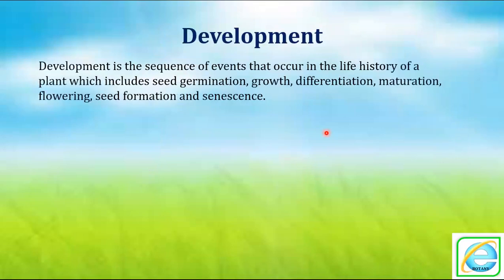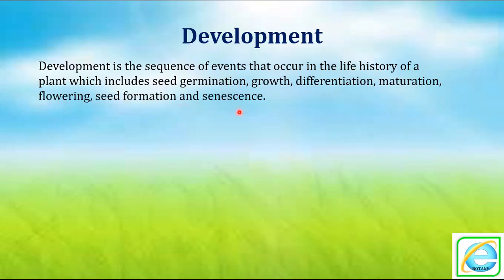Development is the sequence of events that occur in the life history of a plant, which includes seed germination, growth, differentiation, maturation, flowering, seed formation, and senescence. The summation of all these events we call development.